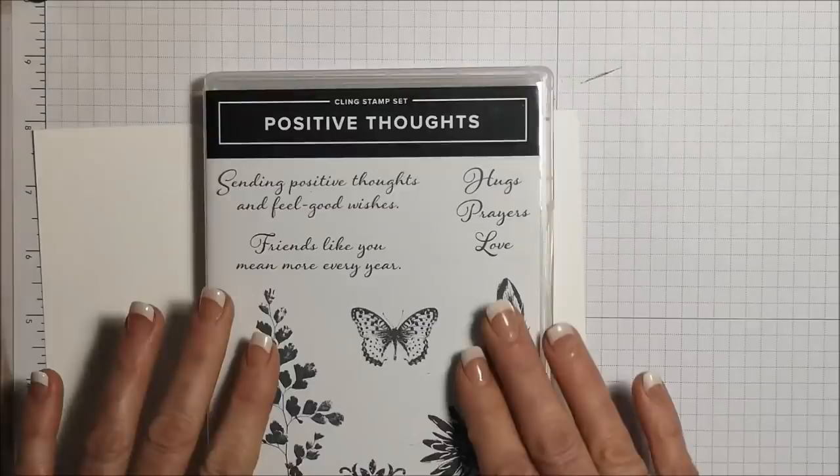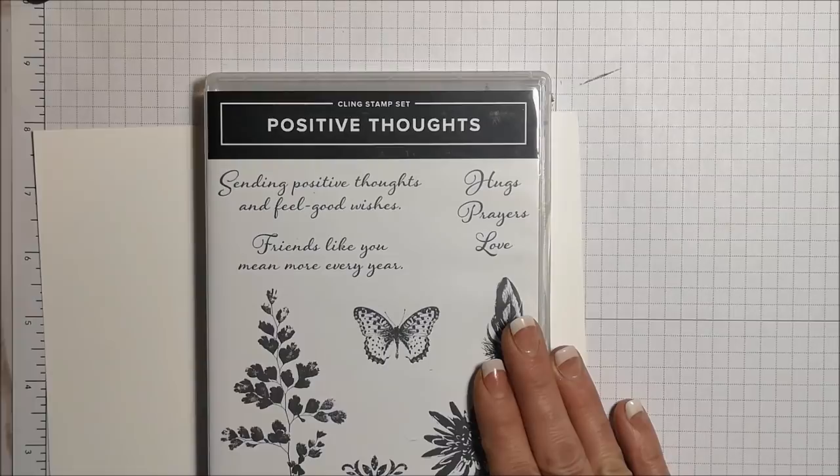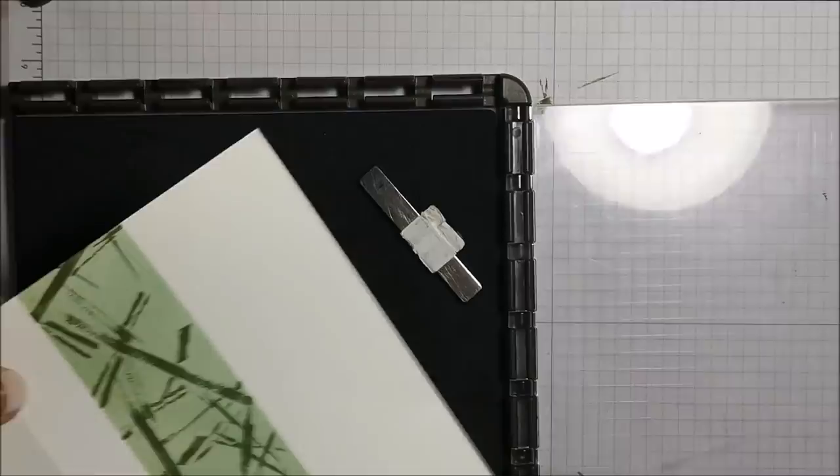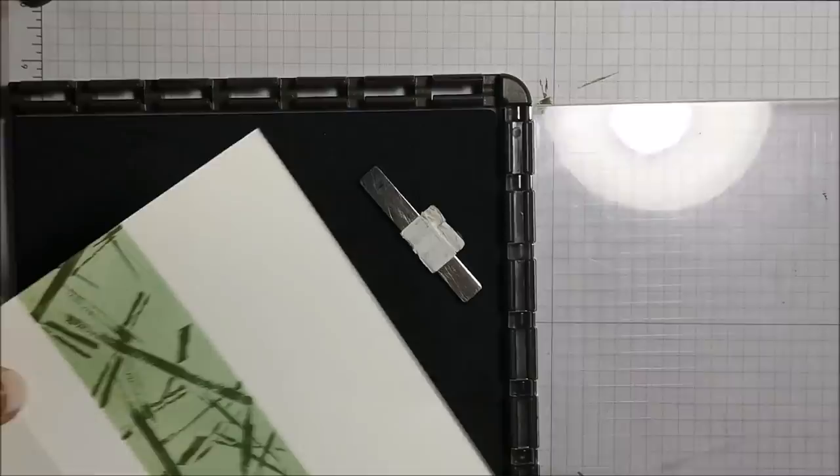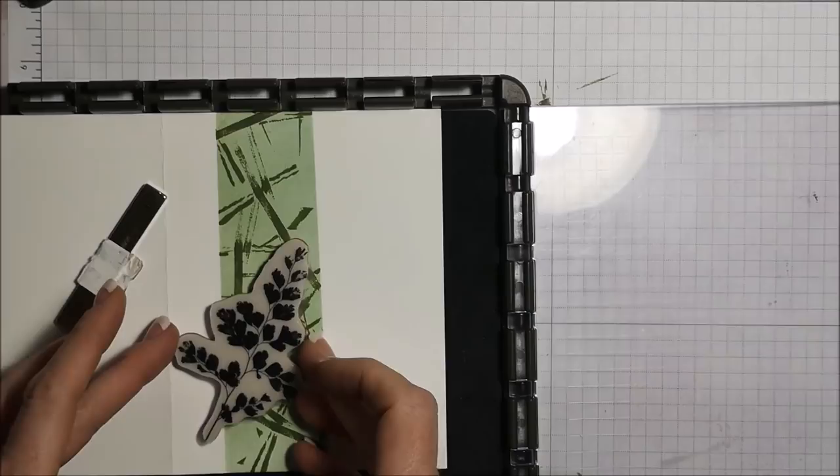And I am using a new stamp set for this card. This is called Positive Thoughts because this stamp is very similar to the fern image that I used in the original video. And this will be lovely on this card. So let's pull that out and I'm bringing in my Stamparatus. And let's see where I want to put this. I'm really copying this from that original card that I made.